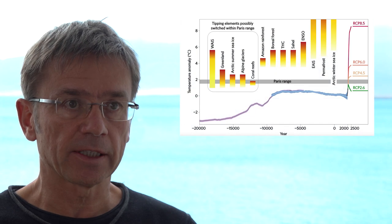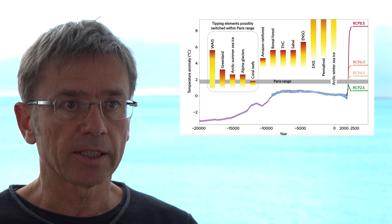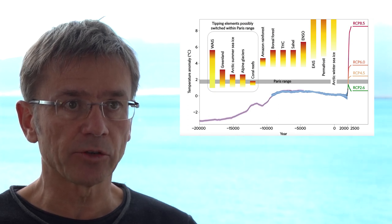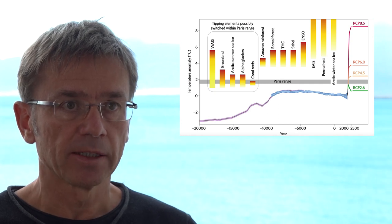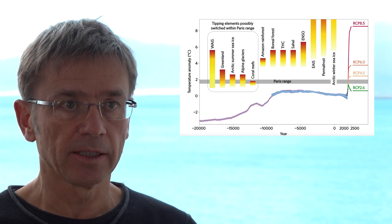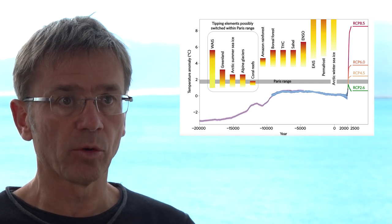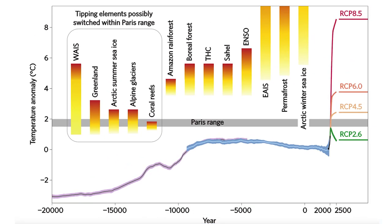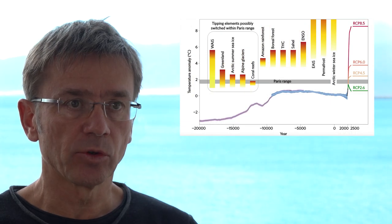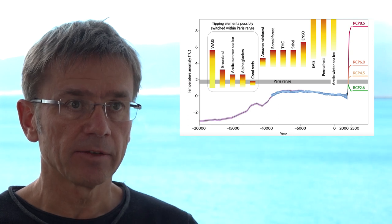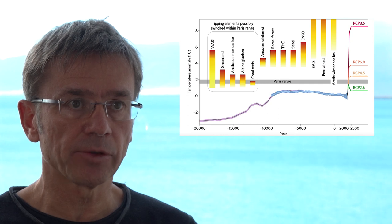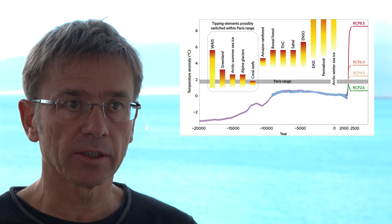The Greenland ice sheet also has a critical threshold, although the physics is different from the West Antarctic ice sheet. The critical feedback that makes this system unstable is the so-called ice elevation feedback. Because the Greenland ice sheet is about 3,000 meters thick, when it gets thinner due to warming, melting, and increased ice flow into the ocean, the surface gets lower in the atmosphere — and the lower you get, the warmer it gets. So the smaller the Greenland ice sheet gets, the more it gets into warmer air, causing a vicious circle that will eventually eliminate the entire ice sheet once we pass the critical tipping point.